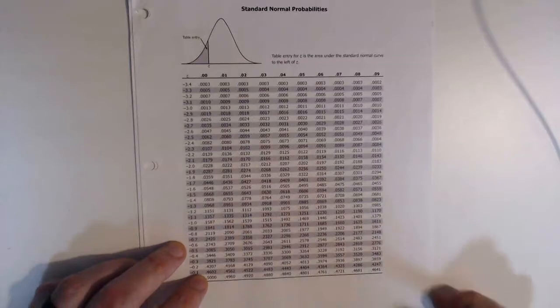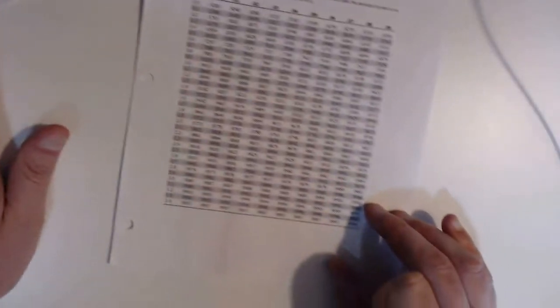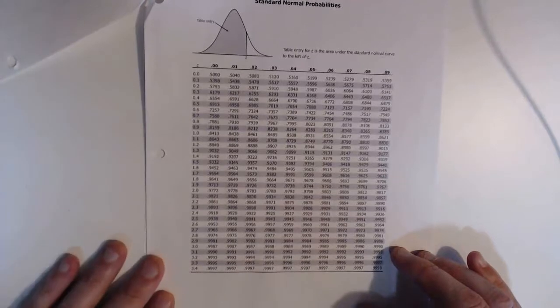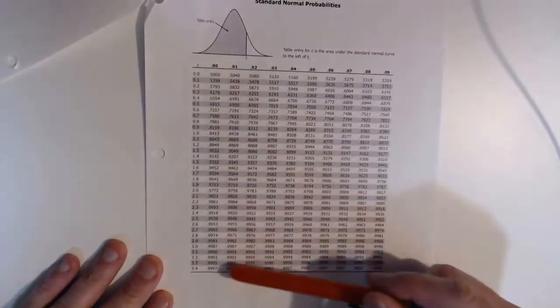Now the first page is all negative values, the second page represents all positive values, and so here we have all of those values greater than 0.